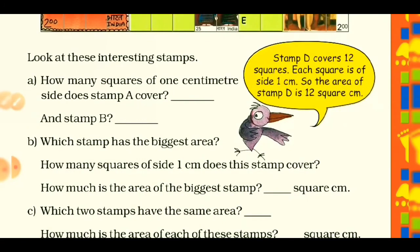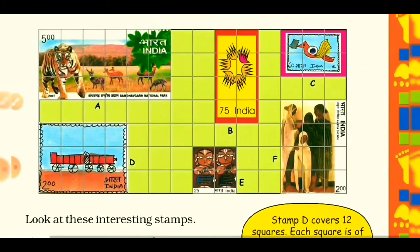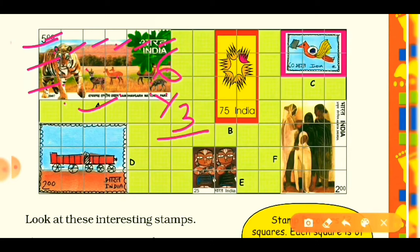Question A: How many squares of one centimeter side does stamp A cover, and stamp B? Come to stamp A first. You can see many small square boxes. Instead of counting one by one, let's find a simpler way. Count the boxes vertically: 1, 2, 3 — that's 3 squares. Count horizontally: 1, 2, 3, 4, 5, 6 — that's 6 squares. Multiply 6 × 3 = 18. So stamp A covers 18 squares.